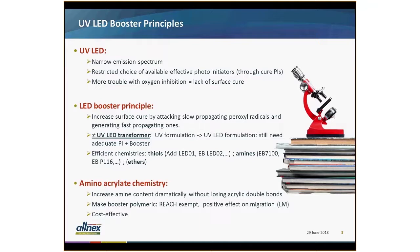which we call the LED booster. The principle around it is that if radicals are in presence with oxygen, you form peroxyl radicals, and these are very slow propagating radicals that slow down the reaction. You can attack these peroxyl radicals with hydrogen donors, and the result is that you free the radicals again, which gives you the reactivity that you want. To be clear, our LED booster is an LED transformer — you still need to adapt your photo initiators for the right curing — but together with the booster you can tune the formulation.